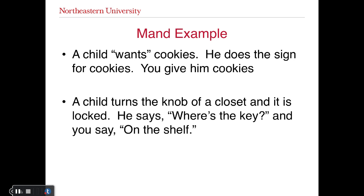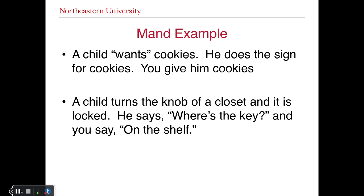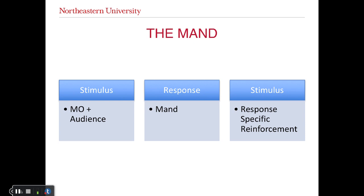In the second example, there's a locked door and the child says 'where's the key?' and you say 'on the shelf.' Think about how that breaks down into the contingency: the MO, the audience, the mand, and then the response-specific reinforcement. In the first situation, we noted the MO as food deprivation — in the presence of cookie deprivation, the sign for cookies is reinforced with cookie presentation. In the second one, the MO would be not knowing where the key is, the audience would be you, and the response is 'where's the key?'